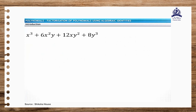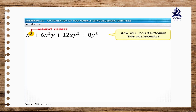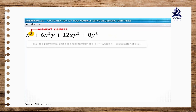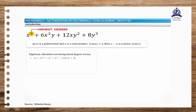Now, we'll consider another polynomial. The highest degree of this polynomial is 3. Hence, it is a cubic polynomial. How will you factorize this polynomial? We know that a cubic polynomial can be factorized by using the factor theorem. You can also use the algebraic identities involving third degree terms. The polynomial must be in the form of whole cubes — sum or difference of cubes.